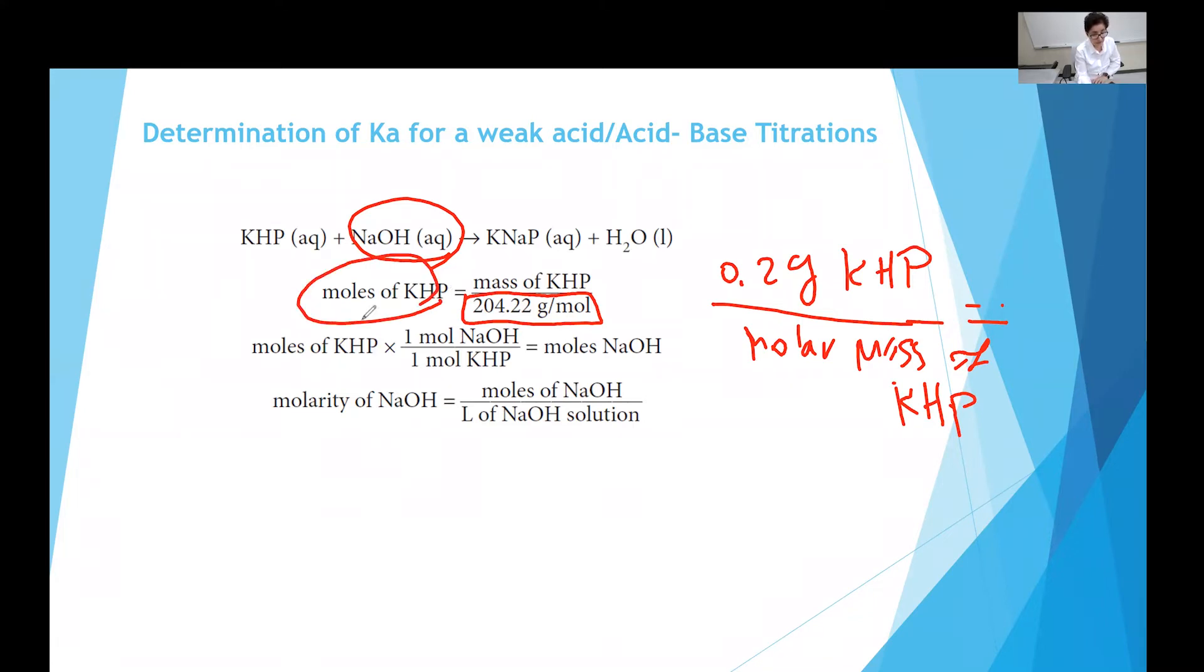Then you dissolve the KHP in water, add phenolphthalein as acid-base indicator because your reactants and products are all colorless. So you have to have an indicator. If you're not using a pH meter, you use the indicator. You're using phenolphthalein, which is a very good acid-base indicator when you are using a strong base. It's very sharp.